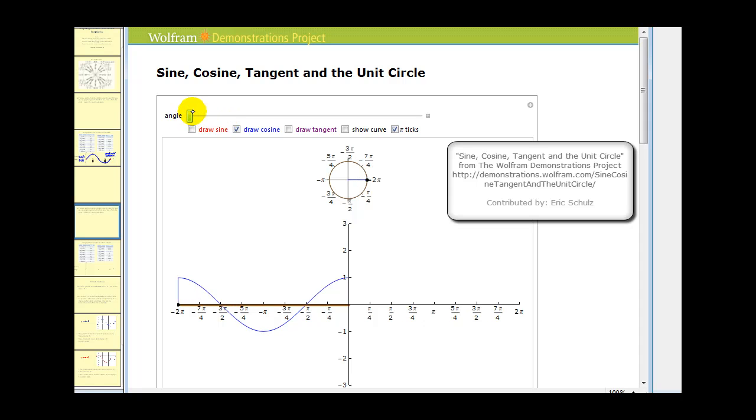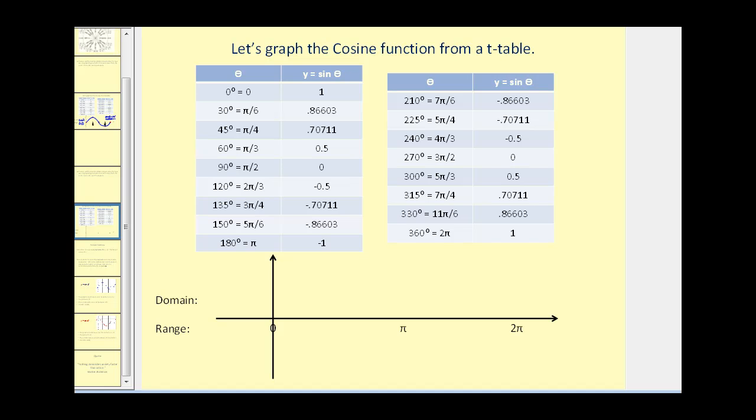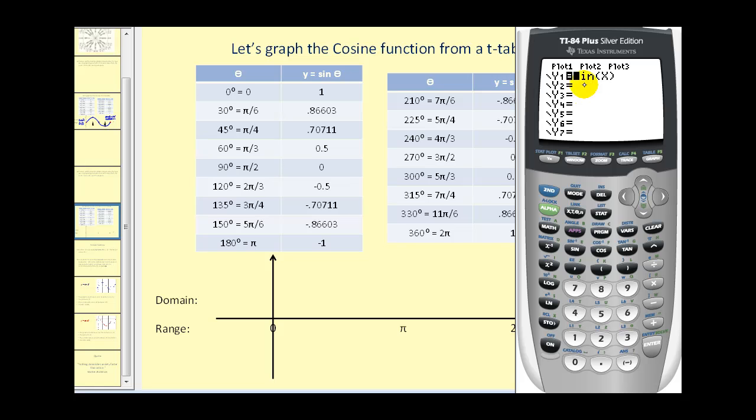Okay, let's go ahead and graph this by hand as well. Again, I've already taken the liberty to fill out this table. Again, you could do this on your own if you change the function to cosine x and go to the table and plot various angles. Notice at zero, it's one. At 90 degrees, it's zero, and so on.